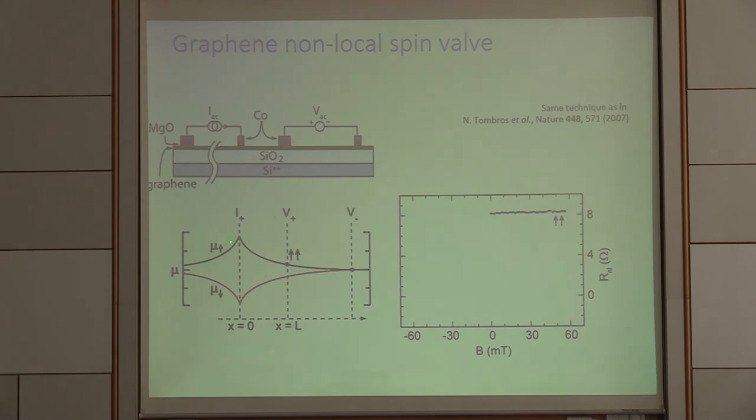And this is now the electrochemical potential, for example, of spin-up electrons. Starting from this contact, they diffuse in both directions. And now we actually probe, or we can probe, the difference in these two electrochemical potentials by looking at this voltage drop here when switching the polarization of this contact here.